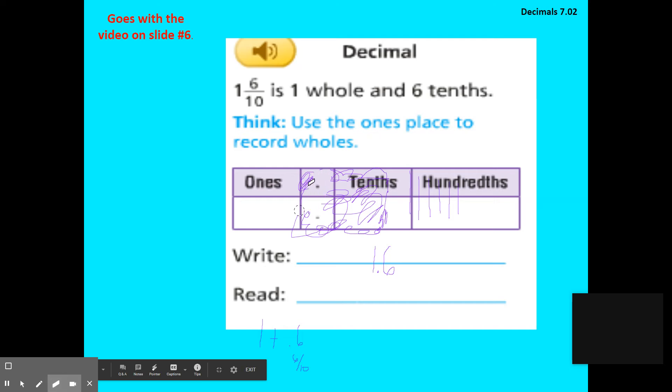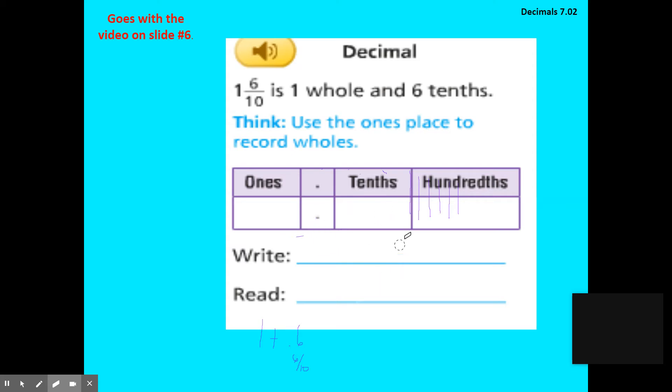In our next slide, we are given a place value chart. All we're going to do with this one is write in our values in the appropriate place value spot. Because we've already done the writing and the reading here, I had one whole and then six tenths. I don't have any value in my hundredths. I could put a zero here or just leave it blank. Either way is fine.